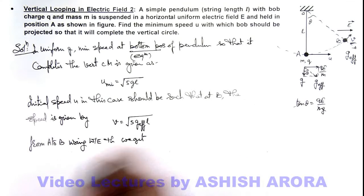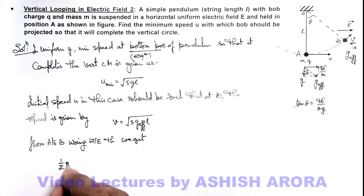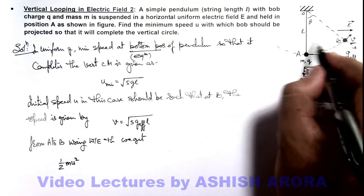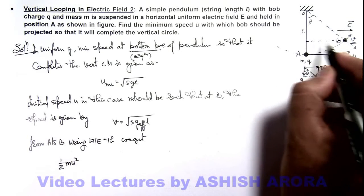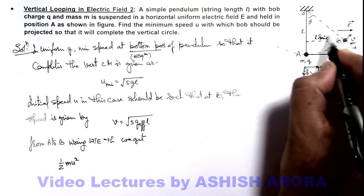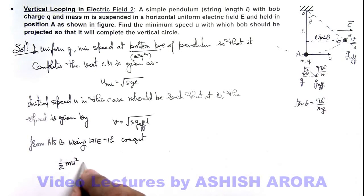At point A the initial kinetic energy is half m u square. When it goes to point B due to electric field, as its displacement is l sine theta, work done by electric field will be plus qE multiplied by l sine theta.